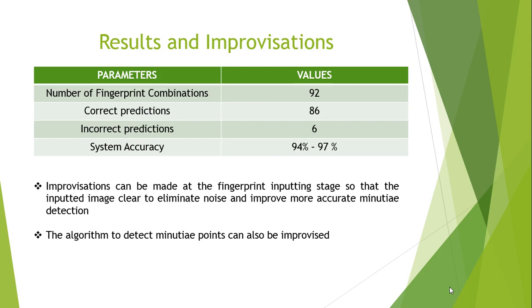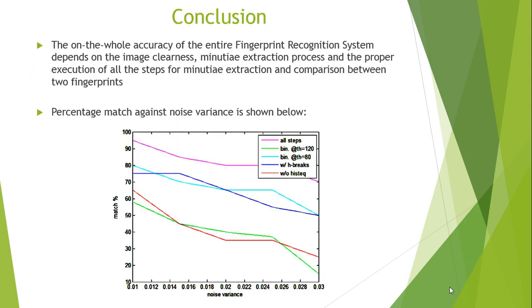The number of fingerprint combinations considered was 92, out of which the number of correct predictions was 86. The system accuracy was calculated after a few rounds of testing a number of different fingerprint samples. The best accuracy obtained was 97% and the worst was 94%. The system accuracy can be improved at the fingerprint inputting stage by obtaining a very clear inputted image to eliminate noise and enhance better minutiae detection. The algorithm to detect minutiae points can also be improvised. On the whole, the accuracy of the entire fingerprint recognition system depends mainly on three factors: image clearness, the minutiae extraction process, and the proper execution of all steps for minutiae extraction and comparison between the two fingerprints. The percentage match against noise variance is shown in the figure, giving information on the behavior of the different stages and their comparison.